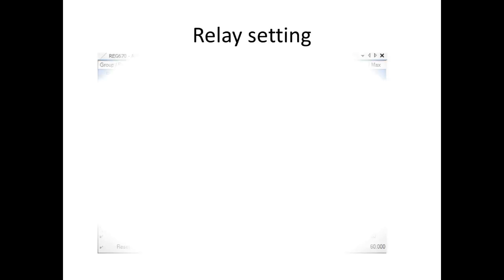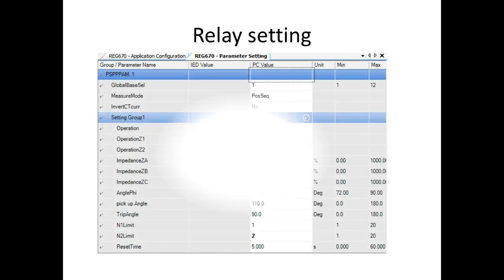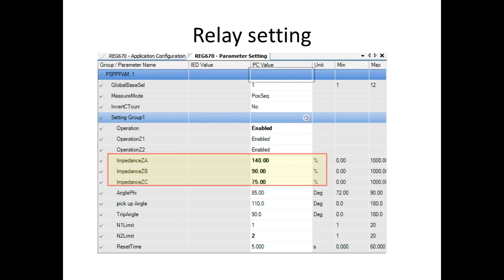First we will see the relay settings. I am going to show this on an ABB relay. For these settings, I am going to do testing. In these settings, ZA, ZB, and ZC are given in percentage.